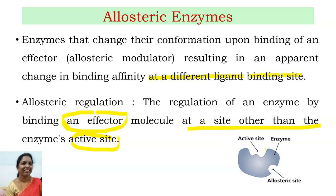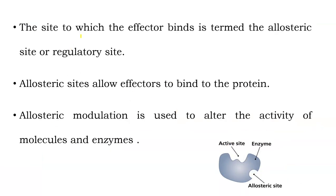To sum up: the enzyme usually contains an active site, but allosteric enzymes also have another site called the allosteric site. These are enzymes which contain both sites. Binding of one molecule at the allosteric site affects the binding of another molecule at the active site — that is the meaning of allosteric enzymes.